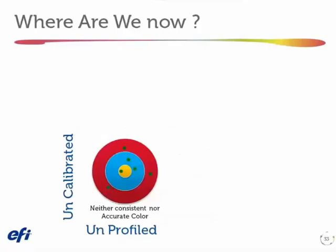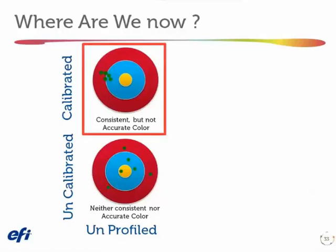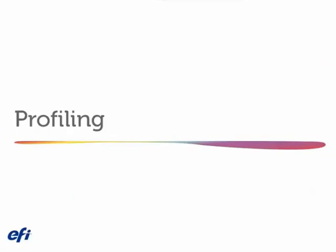By calibration, we've moved from a state where our color is all over the place to a state where our color is consistent. It's not yet hitting the bullseye — we haven't necessarily gotten the color exactly where we want it — but it is printing in a consistent and more predictable fashion. Calibrating on a regular basis is the minimum requirement to get good color in your shop.